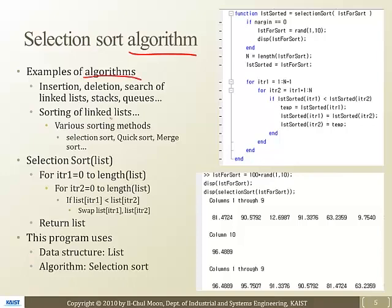There are many different types of sorting algorithms. This one is much easier. There are various sorting methods: selection sort, quick sort, merge sort — we are going to cover these later. But selection sort is one of the easiest, and insertion, deletion, and search are much easier to analyze.